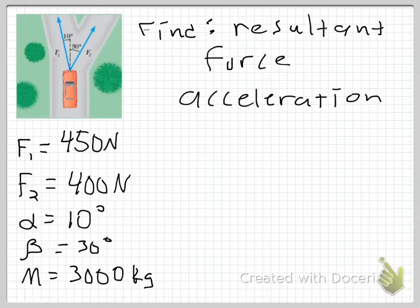This is an example problem in which I'm given that a car of mass 3,000 kilograms is subjected to two forces, which are detailed in this picture above. Force 1 is 450 Newtons at an angle of 10 degrees left of the vertical, or at least as this picture is drawn. F2 is 400 Newtons, 30 degrees to the right of the vertical on this picture. And I'm asked to find the resultant force vector, which means I will need to find the magnitude and direction. And I'm asked to find the resultant acceleration of the car.